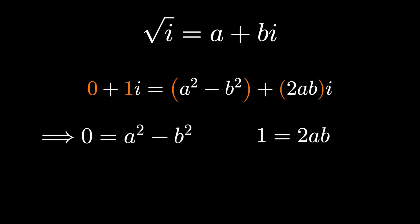And so we have two equations and two unknowns. Pick your favorite way of solving this. I would probably solve for a and make a substitution. Just say a is 1 over 2b.